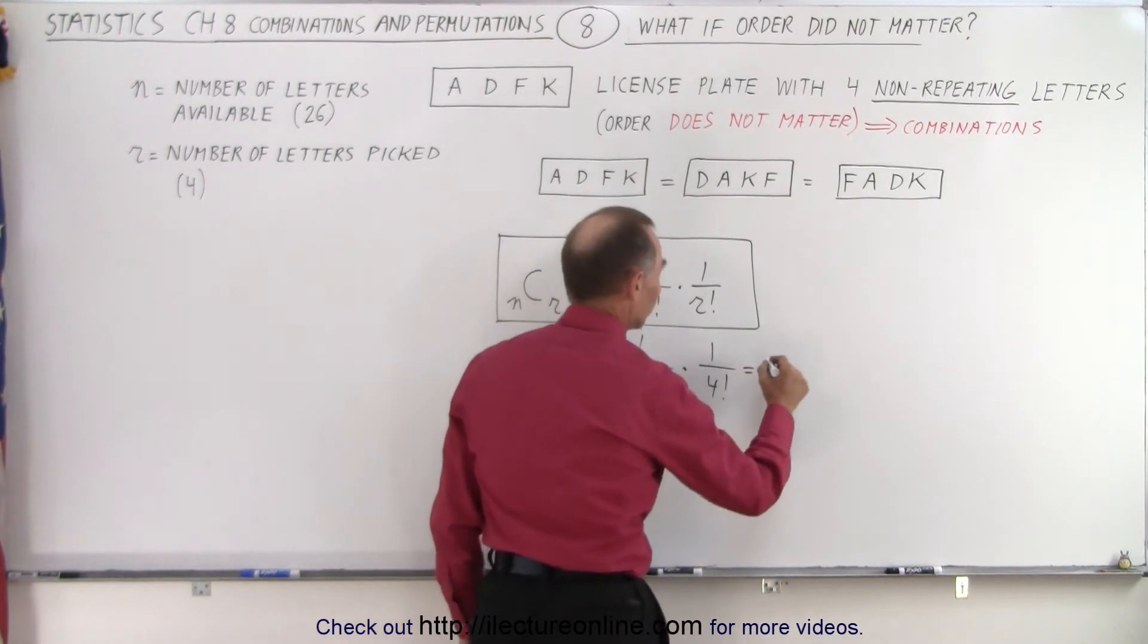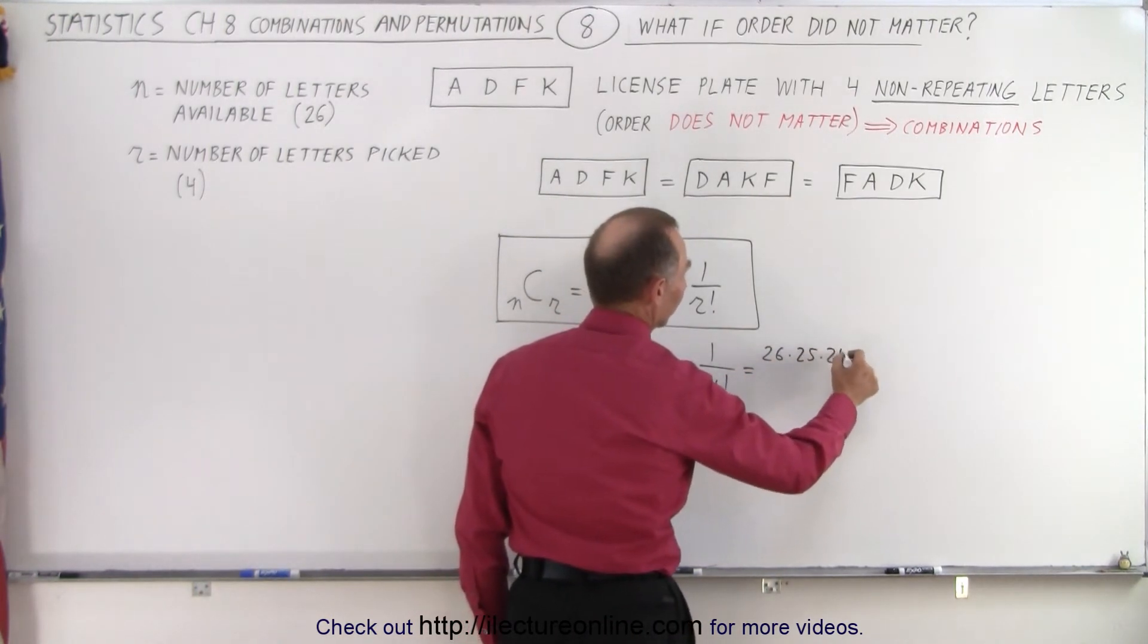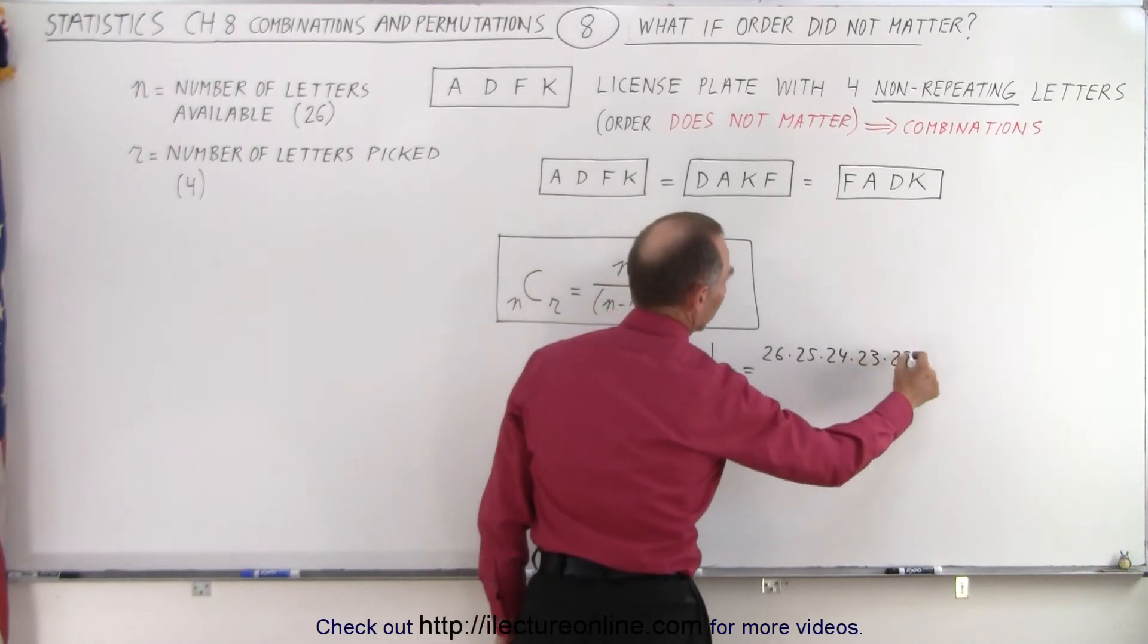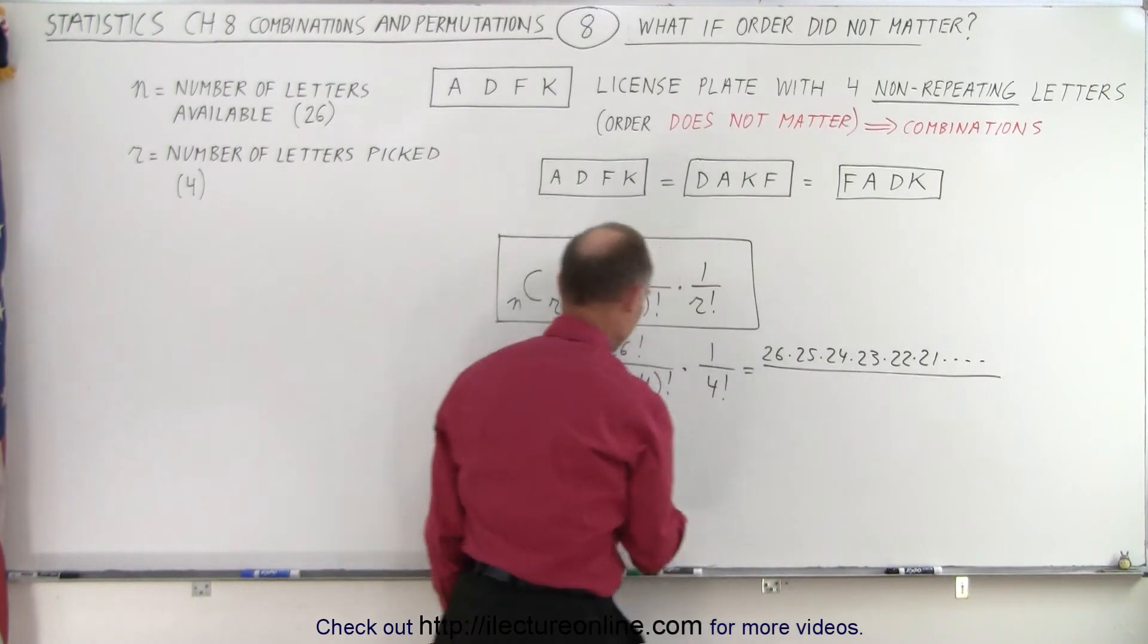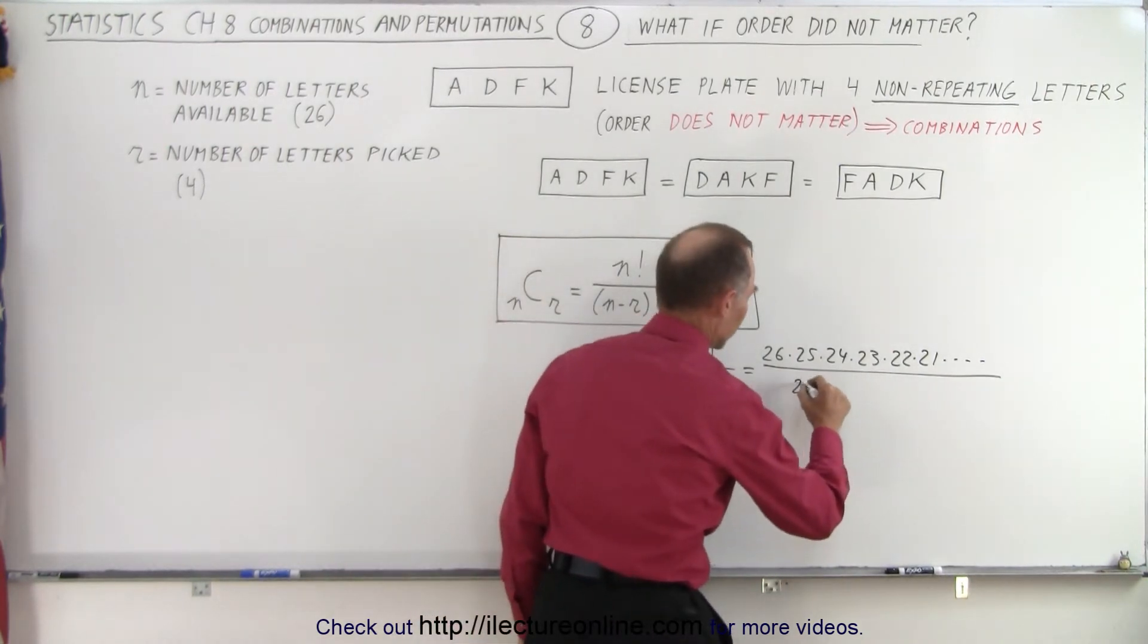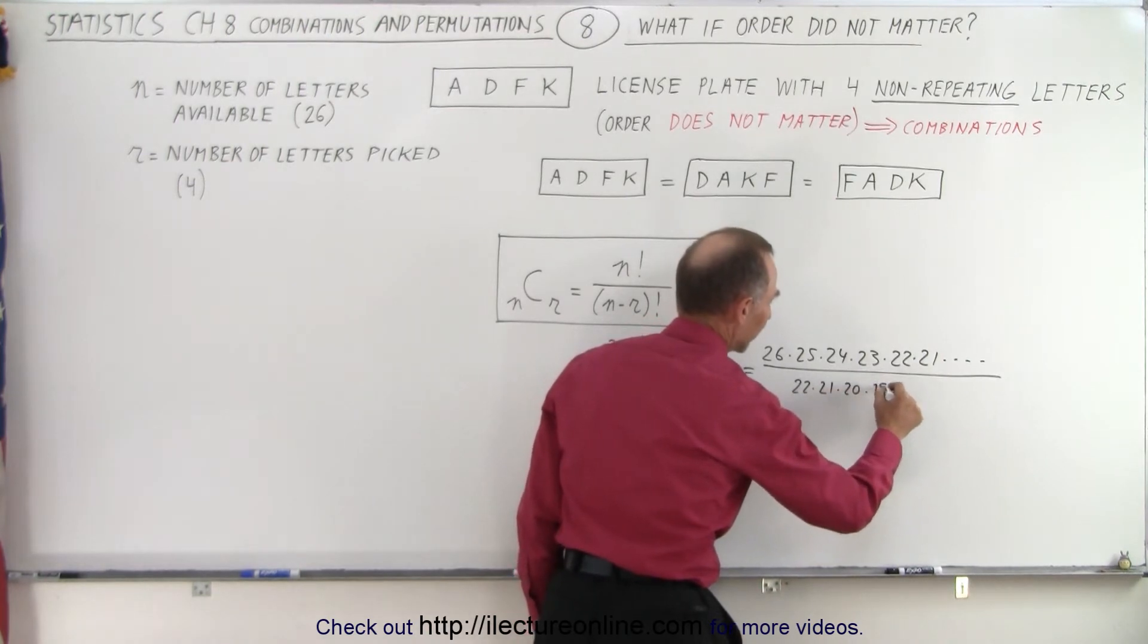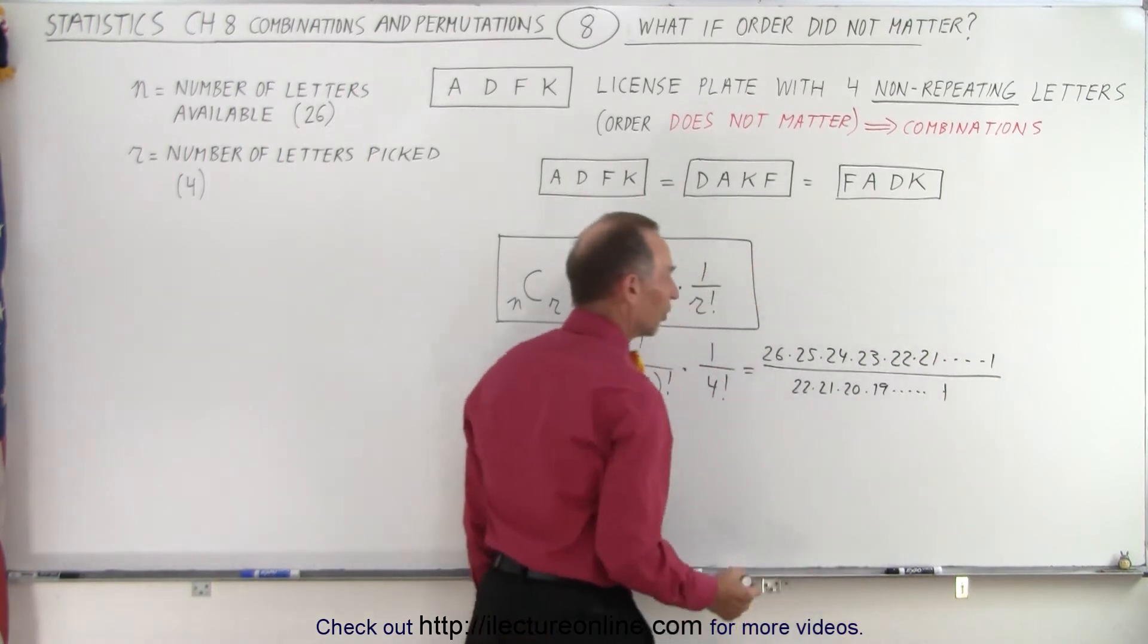So this becomes equal to 26 times 25 times 24 times 23 times 22 times 21 and so forth, all divided by 26 minus 4 is 22 factorial. So it would be 22 times 21 times 20 times 19 times all the way down to times 1.